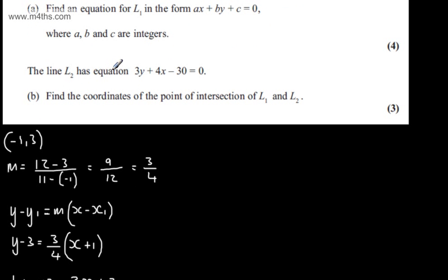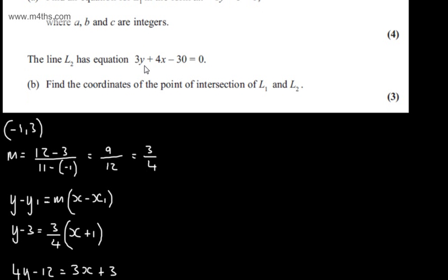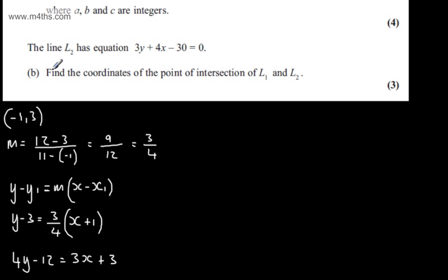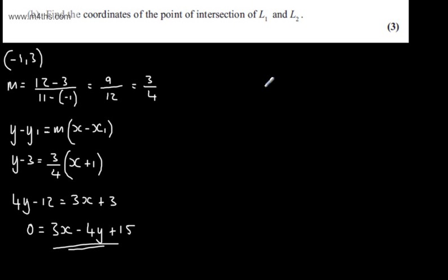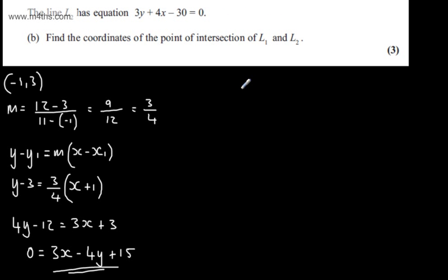We're now told the line L2 has equation 3Y plus 4X minus 30 is equal to 0. In part B we need to find the coordinates of the point of intersection of L1 and L2. We're offered three marks for this question. This is a straightforward linear simultaneous equation. So we have now 3Y plus 4X minus 30 is equal to 0. And I'll call that one equation 1. And we have equation 2 which is going to be 3X minus 4Y plus 15 is equal to 0.